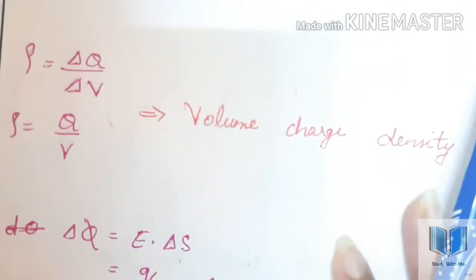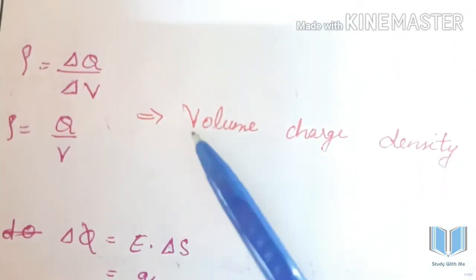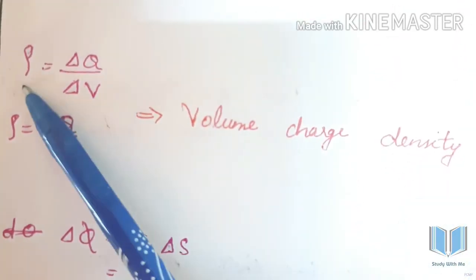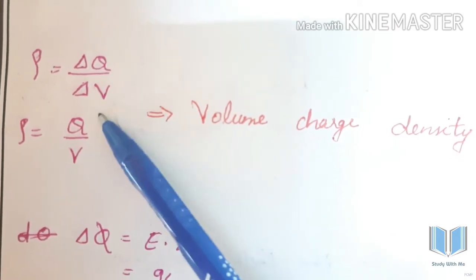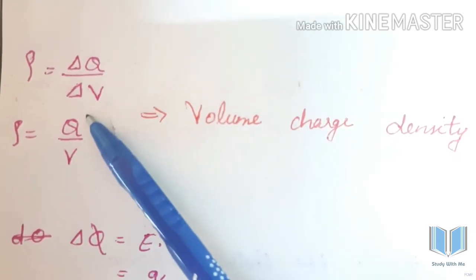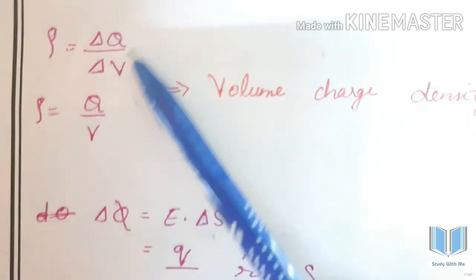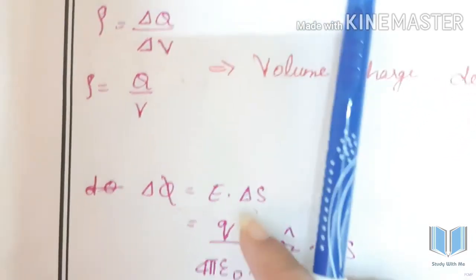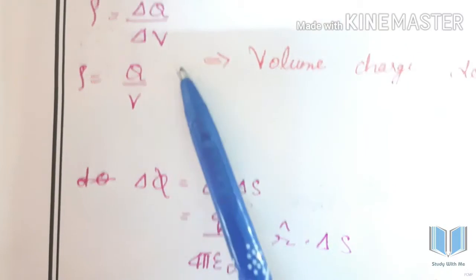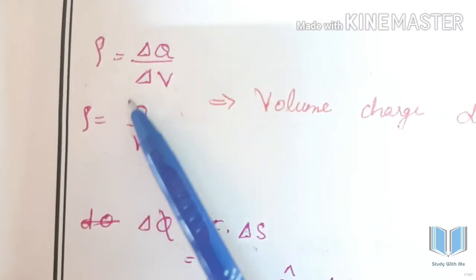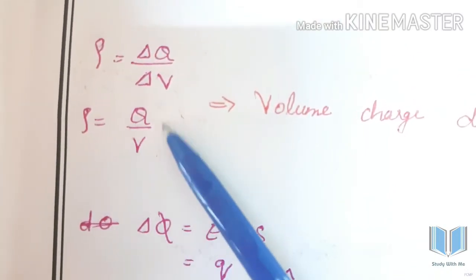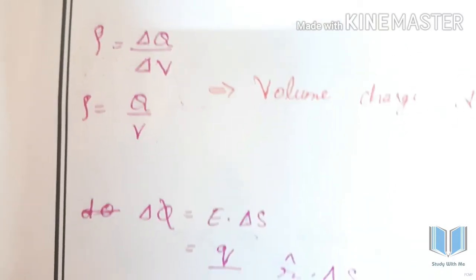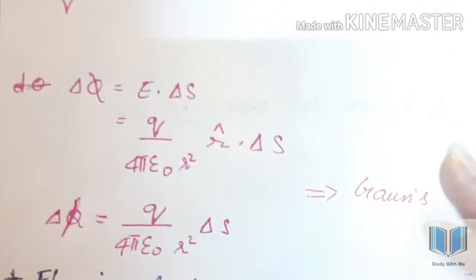Volume charge density: rho equals delta q by delta v. If you use the complete volume, then rho equal to q by v.